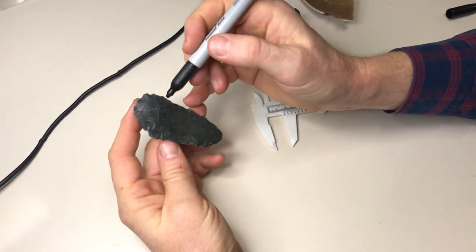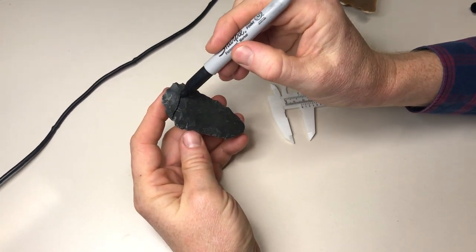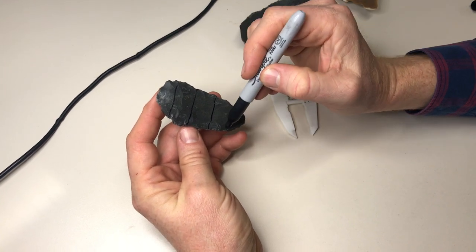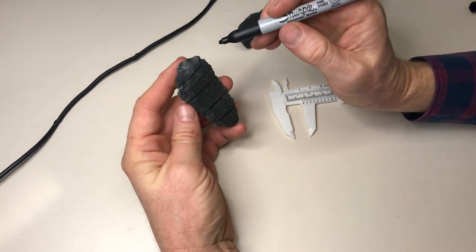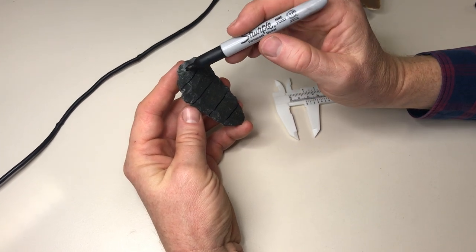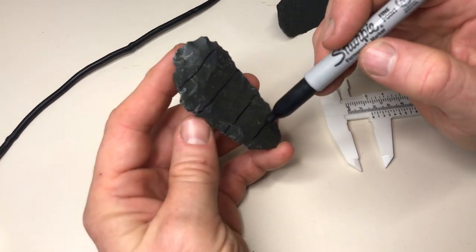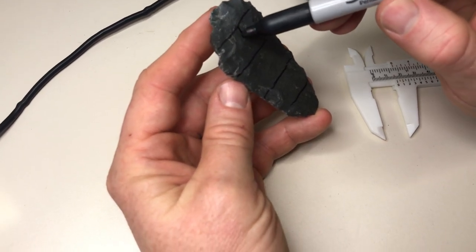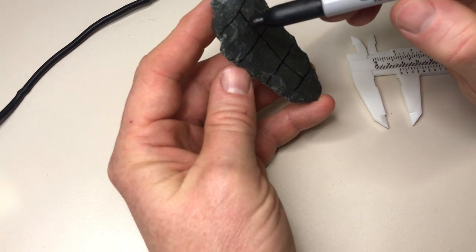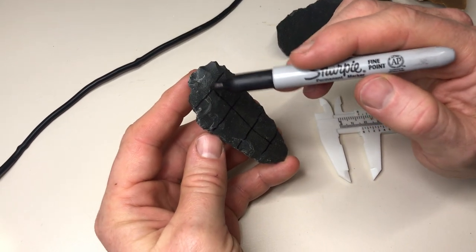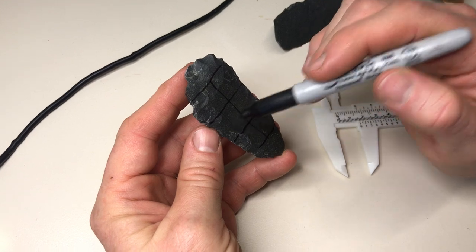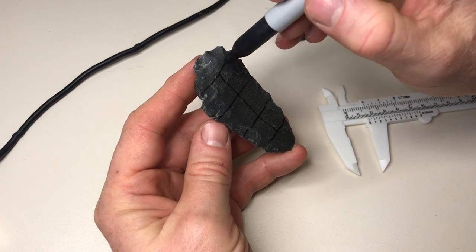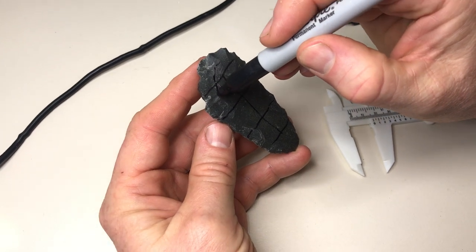So let's divide our flake first of all into four equal segments, so we have a proximal end, a proximal medial, a distal medial, and a distal end. Then let's further divide that into lefts and rights, at least for these middle three ones. So now we have proximal end, left proximal, right proximal, left medial, right medial, left distal, right distal, and distal end.